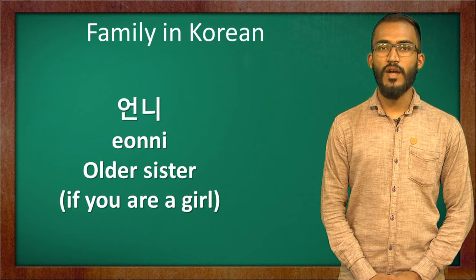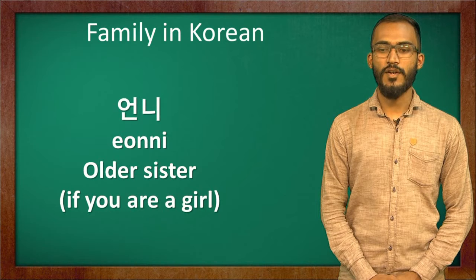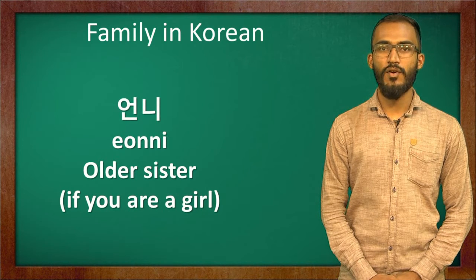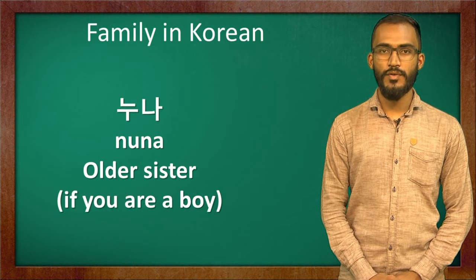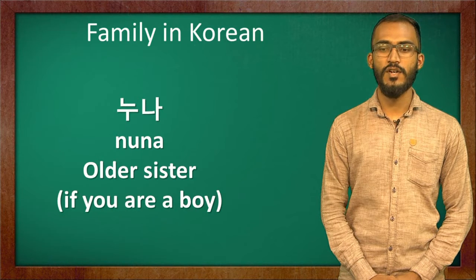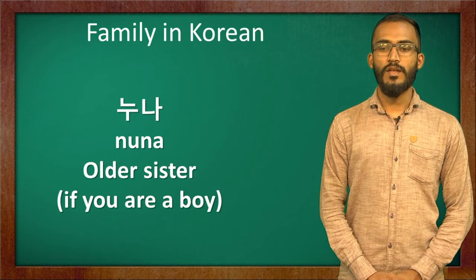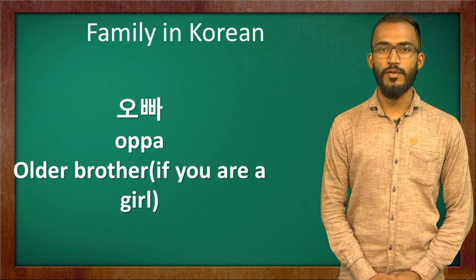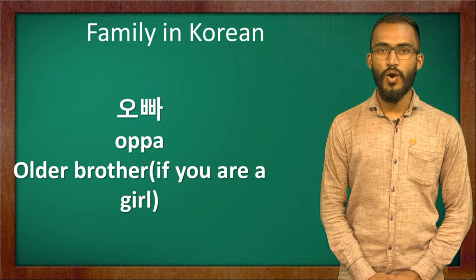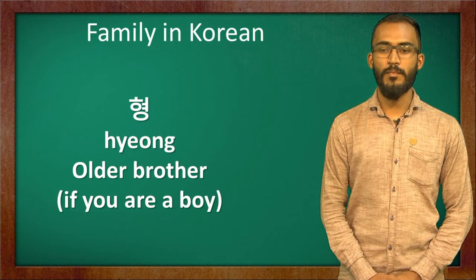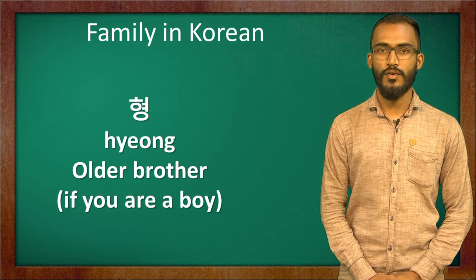언니 means elder sister. If you are a girl, you will call your elder sister 언니. If you are a boy, you will be calling your elder sister 누나. If you are a girl, you will be calling your elder brother 오빠. And if you are a boy, you will be calling your older brother 형.